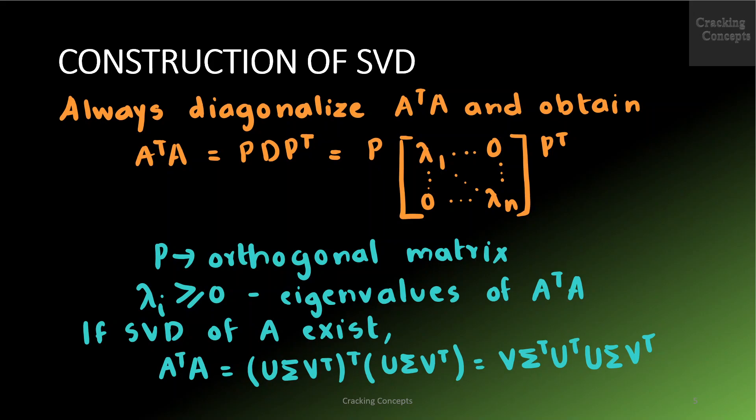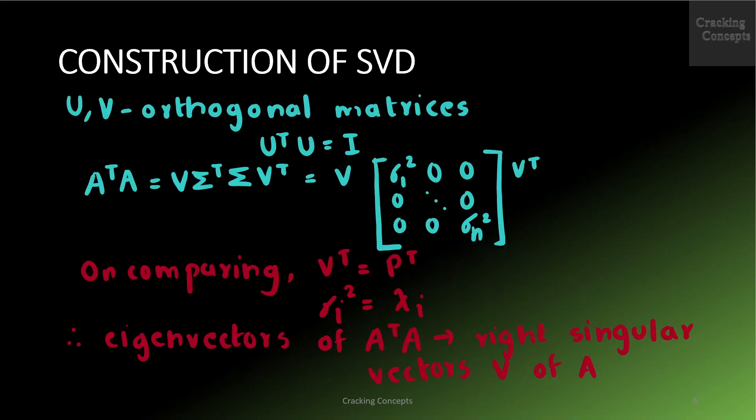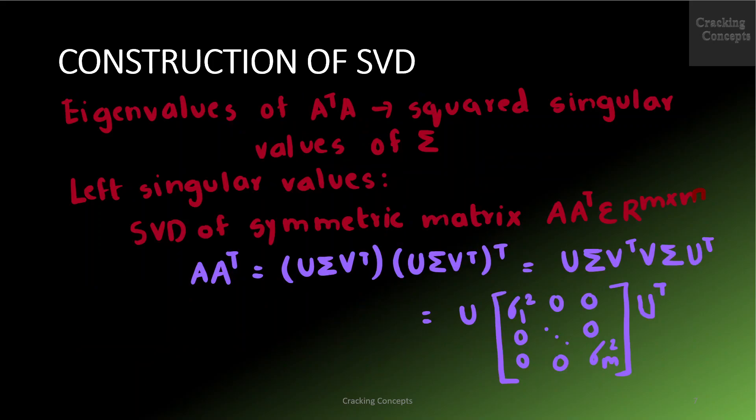Let us assume that the SVD of A exists. Then A^T A can be written as (U Σ V^T)^T (U Σ V^T), where U and V are orthogonal matrices. Therefore, with U^T U = I, we obtain A^T A = V Σ^T Σ V^T, where Σ^T Σ has diagonal elements σ1², ..., σn² and zeros elsewhere. On comparing, we see that V = P, which means σi² = λi. Therefore the eigenvectors of A^T A that compose P are the right singular vectors V of A, and the eigenvalues of A^T A are the squared singular values of Σ.